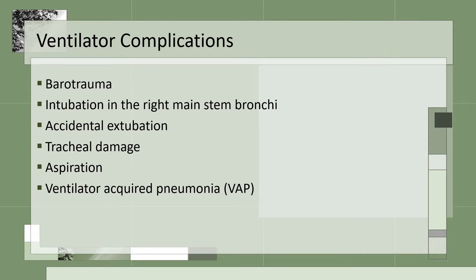Tracheal damage can result from ET tube placement; respiratory therapy will measure cuff pressures on the ET tube and trach tube to prevent tracheal damage. Aspiration is another risk, so we elevate the head of the bed, check gastric residuals, and the patient is placed on a proton pump inhibitor. Patients can also get ventilator-acquired pneumonia.